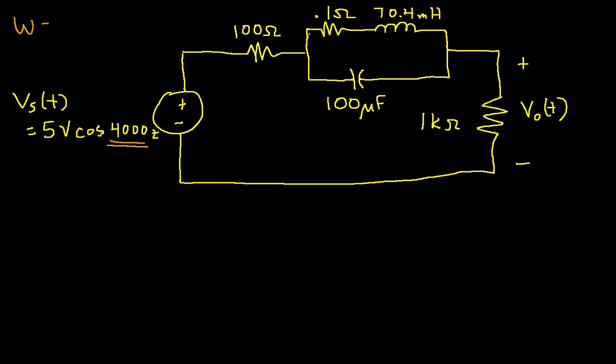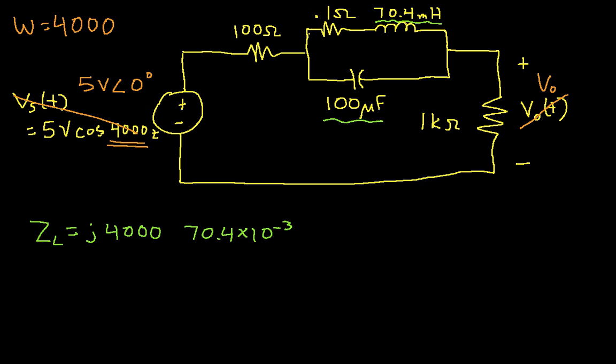So, the first thing to do is identify omega. In this case, we see here that omega is 4000. And then we want to change every time domain voltage or current to a phaser. So, we've created a phaser for the output voltage and a phaser for the input voltage. The next thing we want to do is find the equivalent impedance of the inductor and of the capacitor. So, the equivalent impedance of the inductor is going to be j times 4000, that's omega, times 70.4 times 10 to the minus 3rd, that's the inductance.